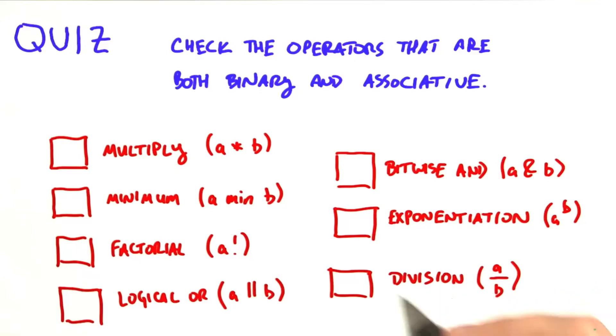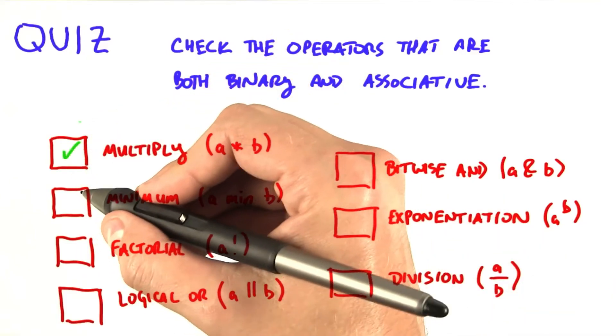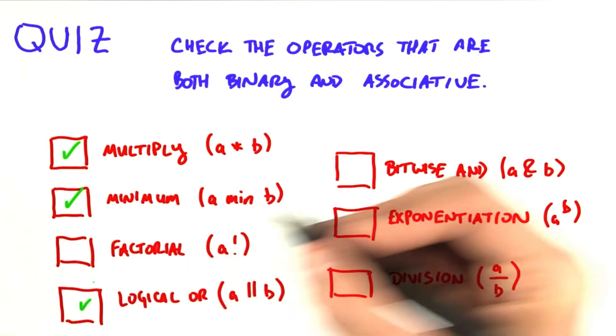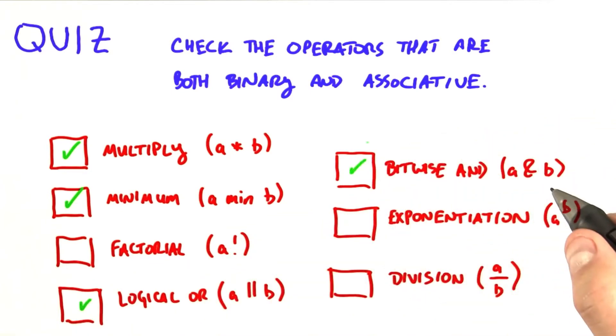Four of these operators are both binary and associative: multiply, minimum, logical, or bitwise and.